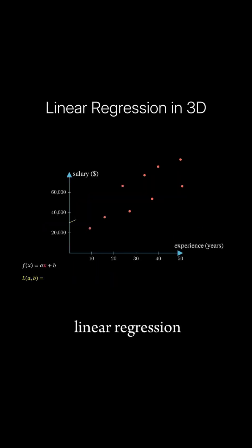Now, to solve linear regression, we need to minimize the average squared error. Remember that each error is the difference between the predicted salary and the actual one. We take the average across all data points.